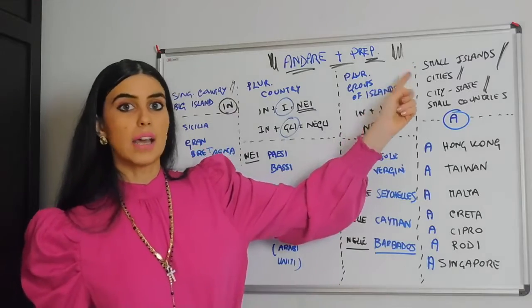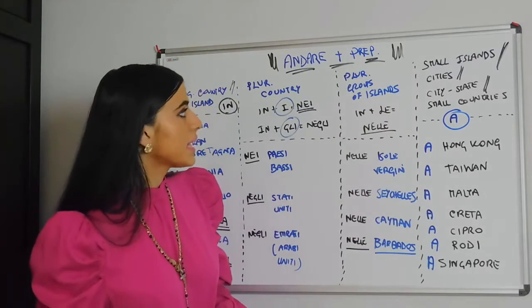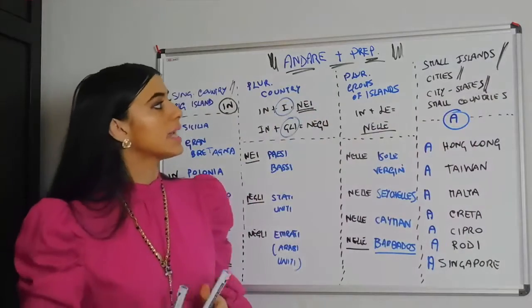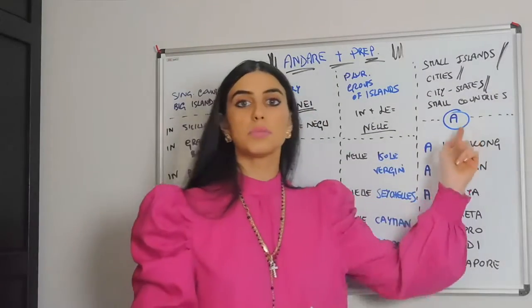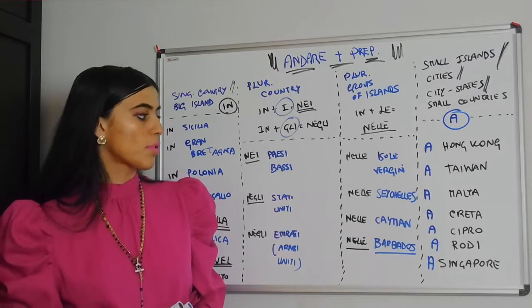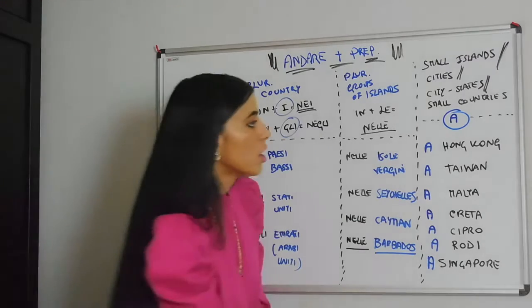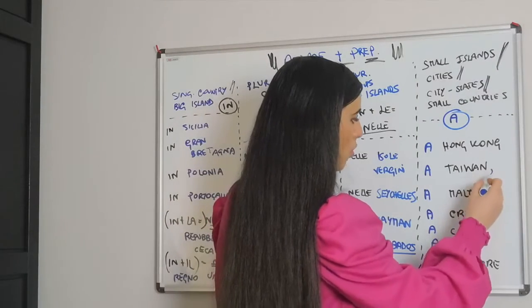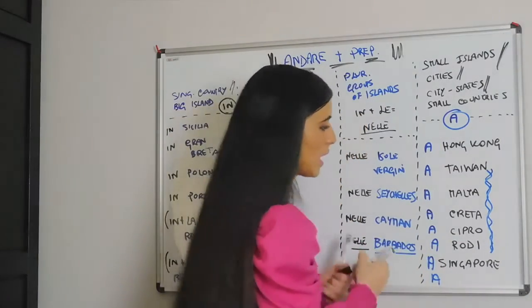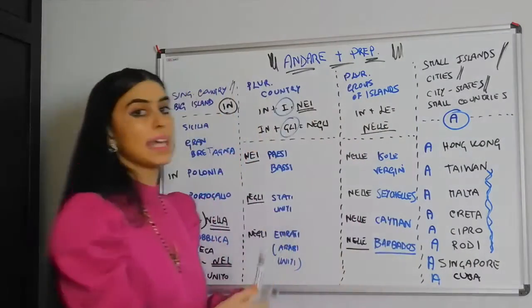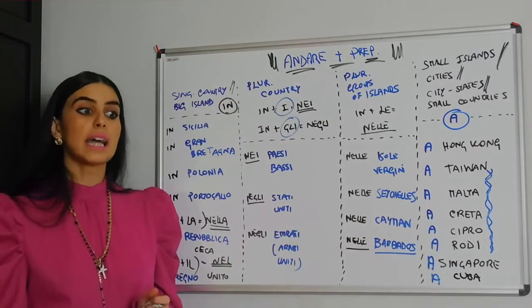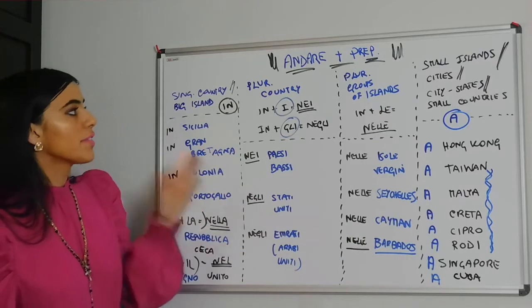The last category is small islands, cities, city-states, and small countries. For these we use A. So: a Hong Kong, a Taiwan, a Malta, a Creta, a Cipro, a Rodi, a Singapore. I could also add a Cuba — note that I say a Cuba but in Giamaica. A Hong Kong, a Singapore — all of these require A.